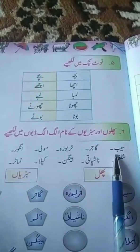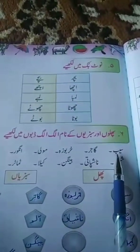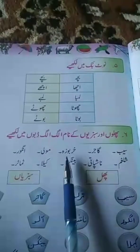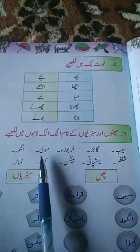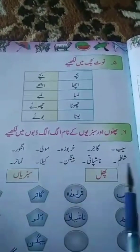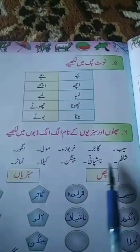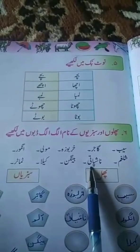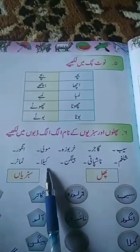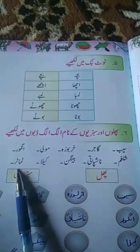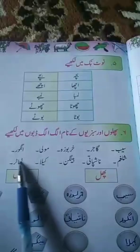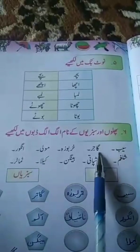Sib (apple), gajar (carrot), kharbouza (melon), muli (radish), anggur (grapes), shalgam (turnip), nashpati (pear), bangan (eggplant), kela (banana), tomatoes. You can make a difference between the vegetables and fruits.